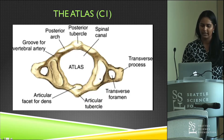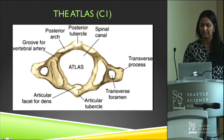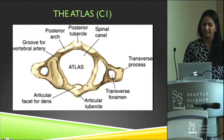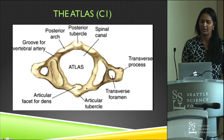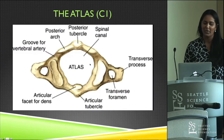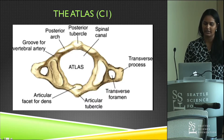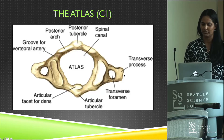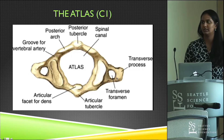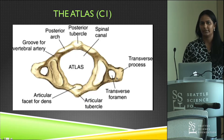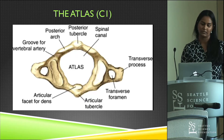You have your lateral masses which extend anteriorly to give you your anterior arches. The anterior arches are typically thicker and shorter when compared to your posterior arches, which are thinner and longer. You also have your posterior tubercle here. Extending from your lateral masses are your transverse processes, which enclose your transverse foramen through which your vertebral arteries, sympathetic nerves, and venous plexus run.